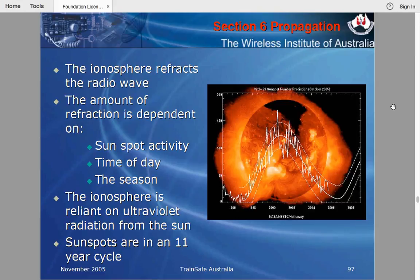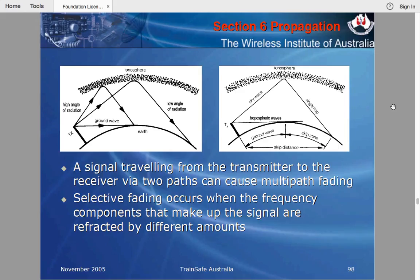The Sun generates sunspots on an 11-year cycle — it goes to a maximum, down to a minimum, then back up to a maximum 11 years later. At the peak of the sunspot cycle, HF propagation increases rapidly and you can make HF contacts around the world very easily.